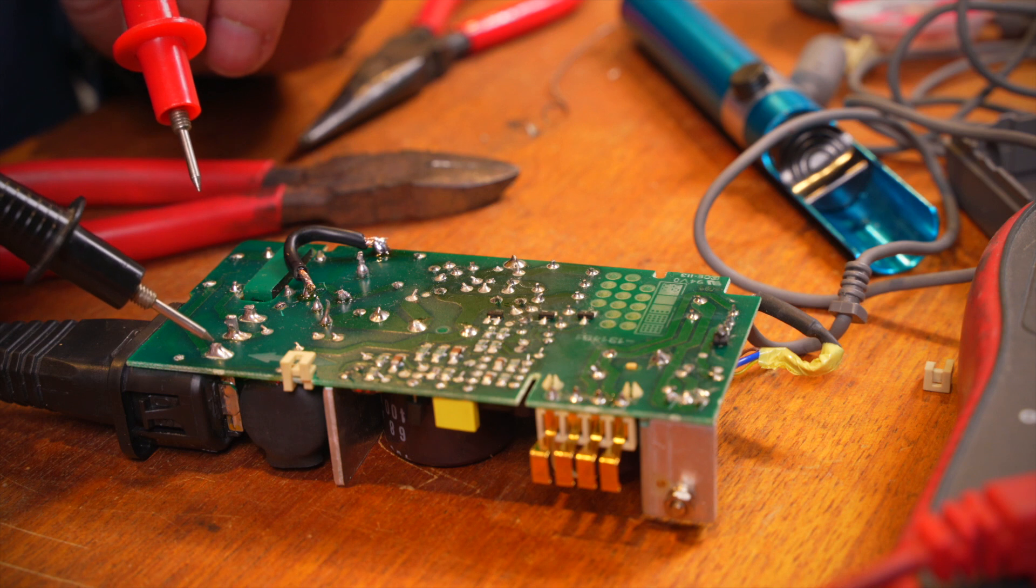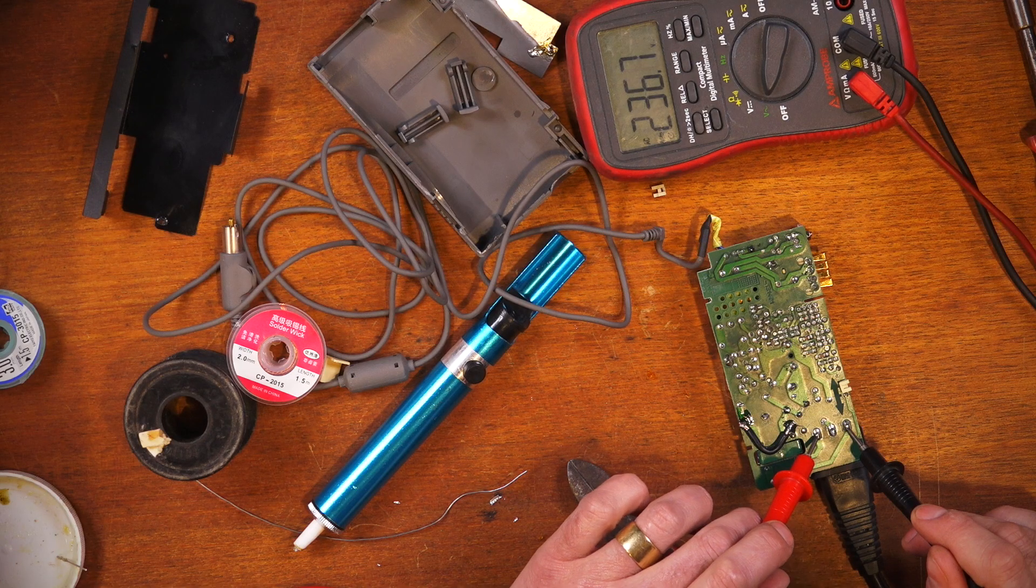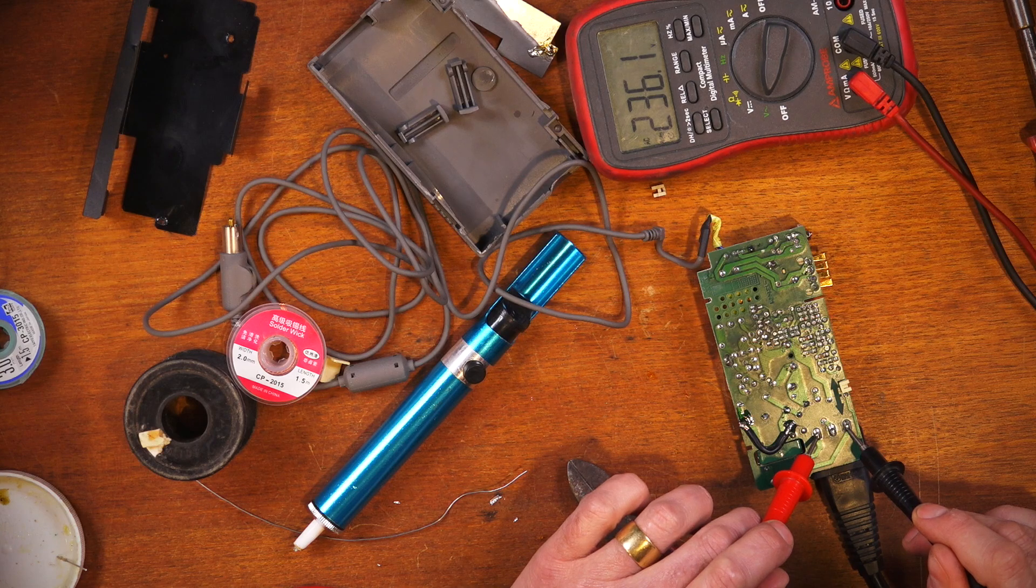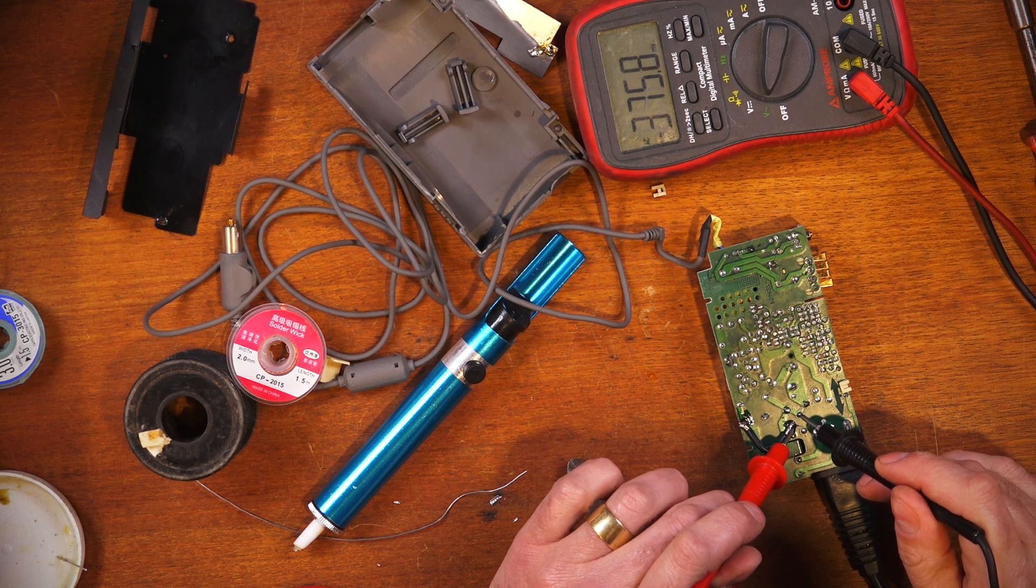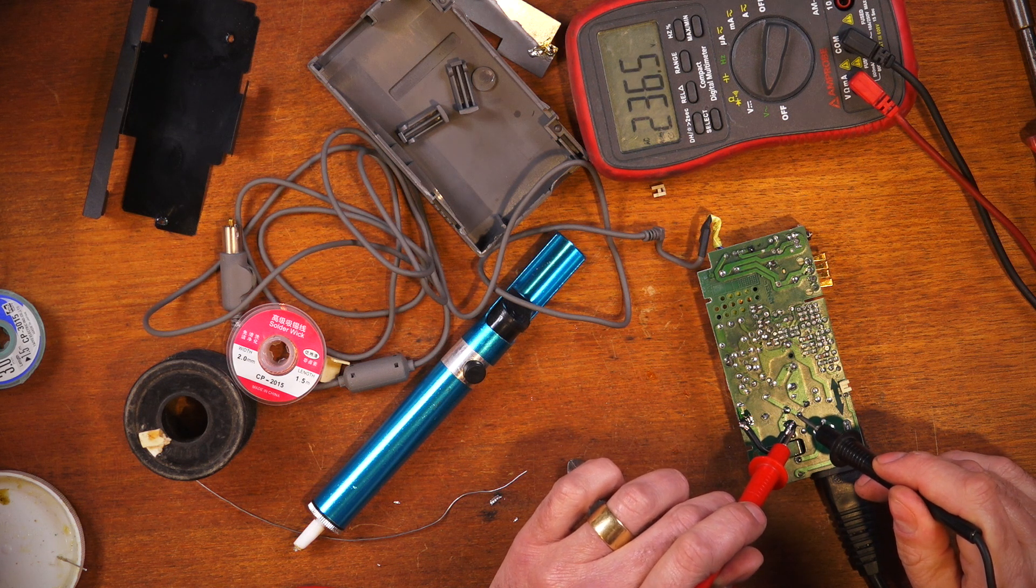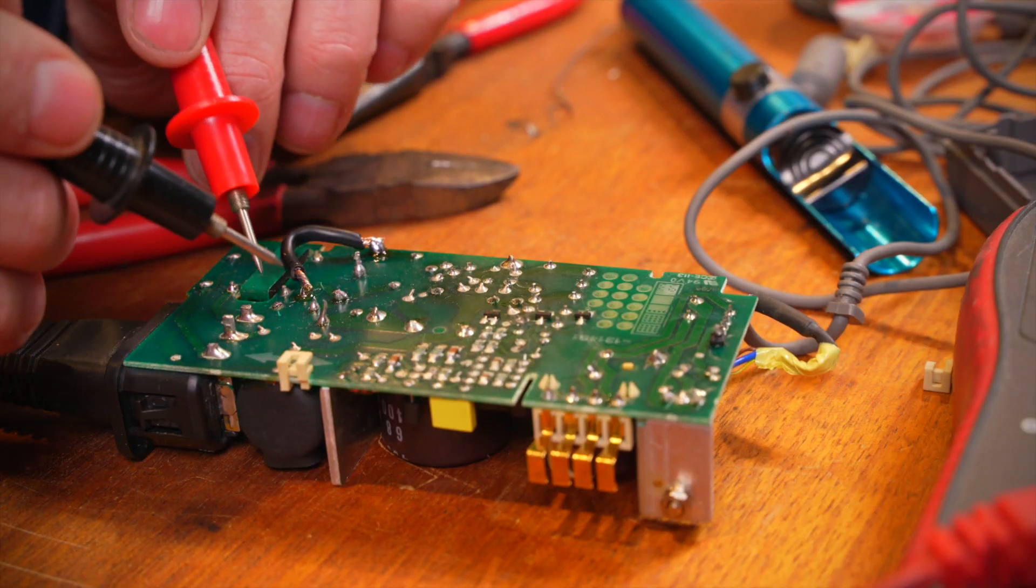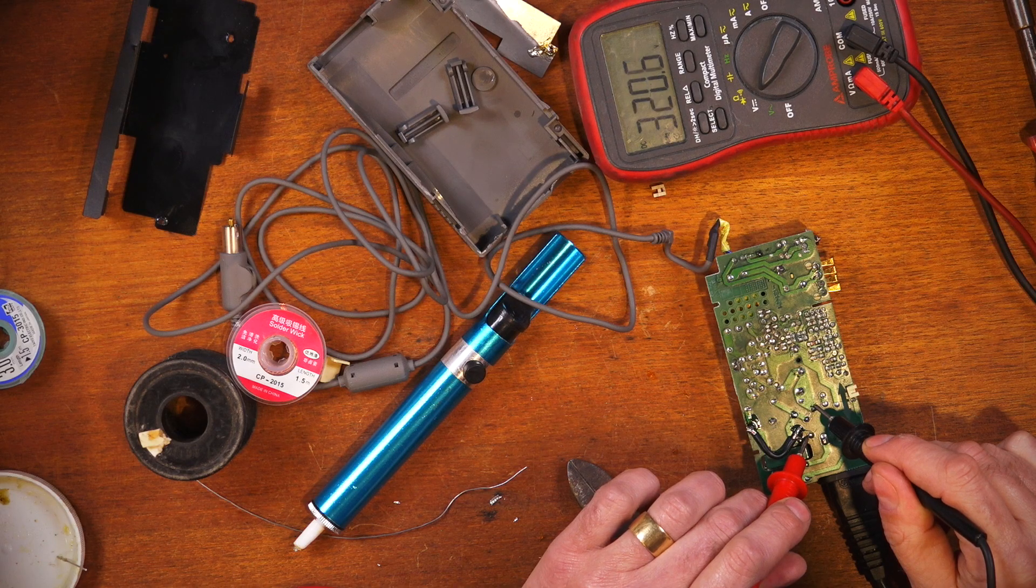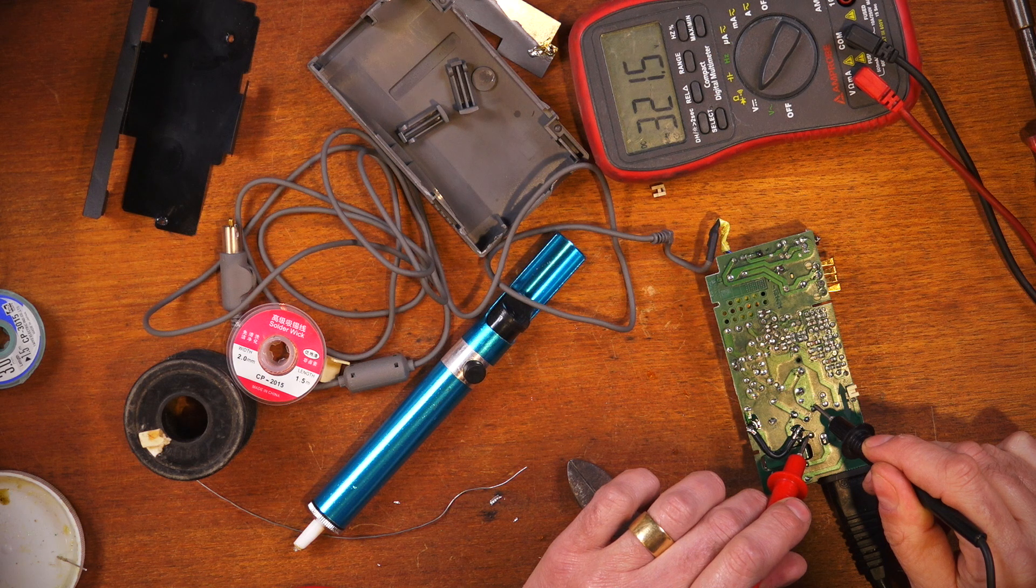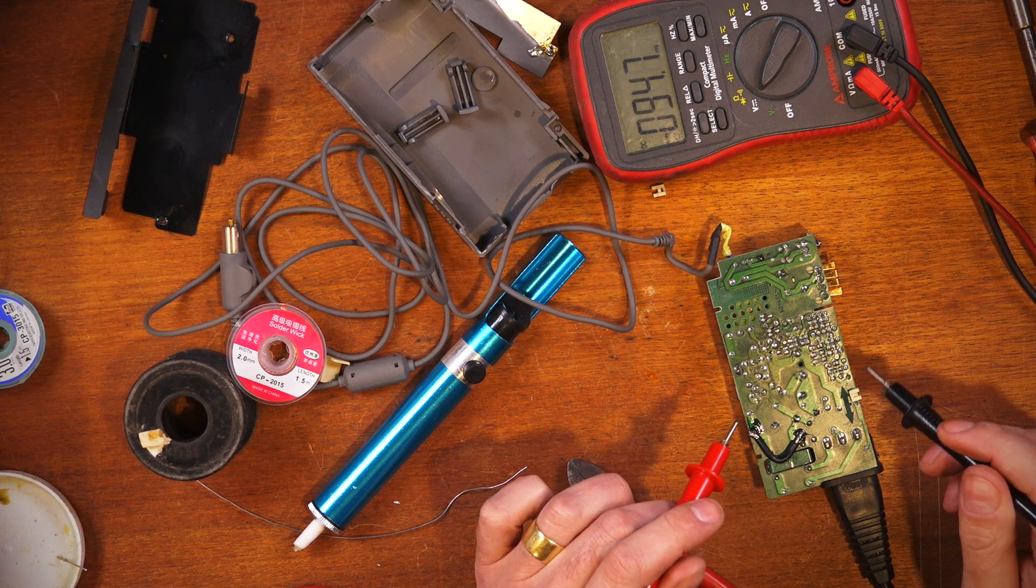We now have, we've got 240 volts or 236 across the input and if we look at our voltage rectifier we now have the same across our voltage rectifier which means our voltage rectifier should be outputting between here and here DC and we're getting 320 odd volts DC which is further than we were before.